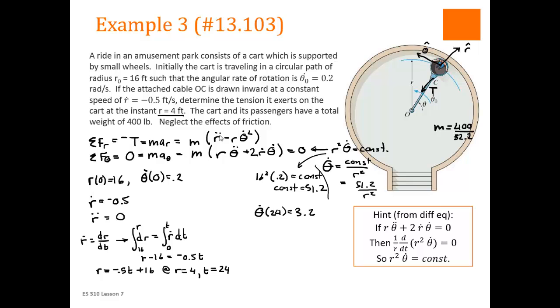Because we're going back up to this equation. We have r double dot, r, and theta dot, all at this point where r is 4.